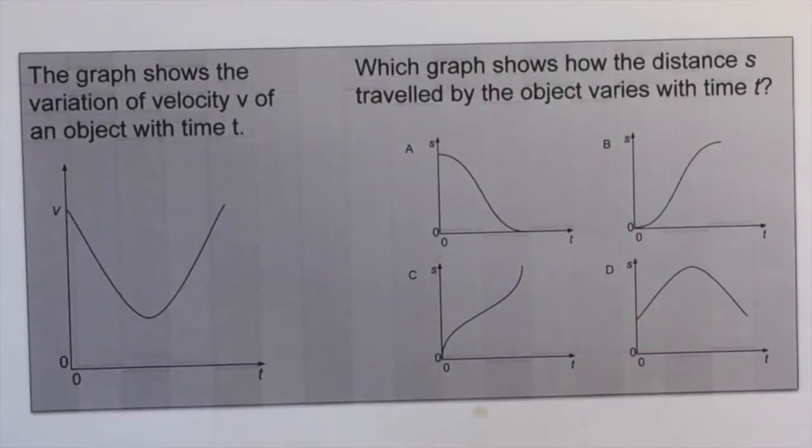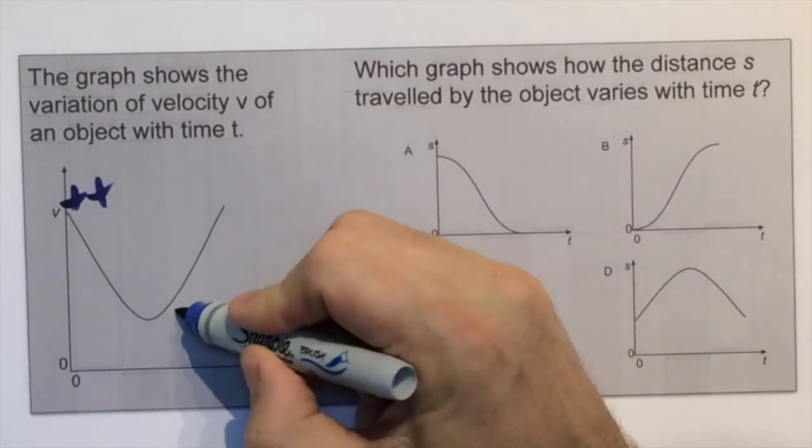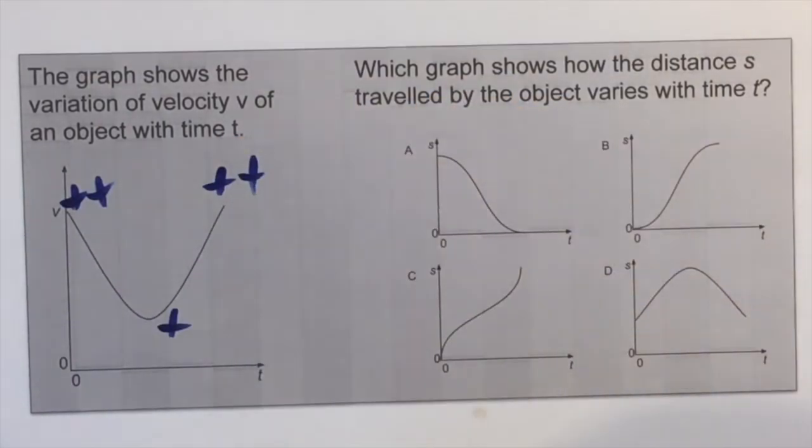If we look at the VT graph, we can see that it begins high and positive. The velocity reduces then over time, but it still remains positive. And then finally the velocity is high again towards the end of the time. So we're looking for an ST graph where the gradient, which is the measure of the velocity, is high and then lower and then high again.